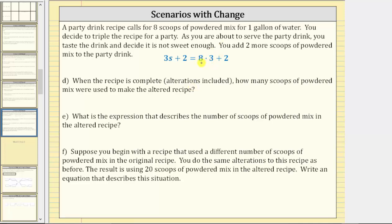Looking back at this equation, if we evaluate the right side, we will know exactly how many scoops of powdered mix were used in the altered recipe. The expression on the right side is eight times three plus two. Using the order of operations, we multiply before adding: eight times three equals twenty-four, and twenty-four plus two equals twenty-six. This makes sense because you first tripled the recipe — eight times three gives twenty-four scoops — and then added two more, giving a total of twenty-six scoops.